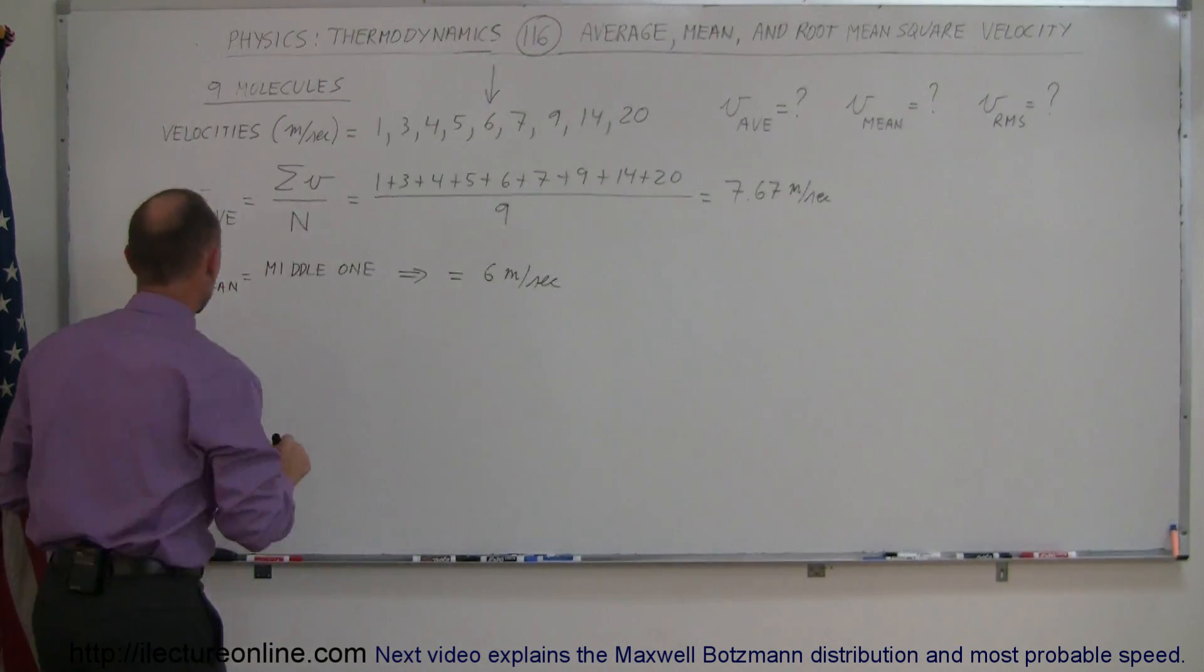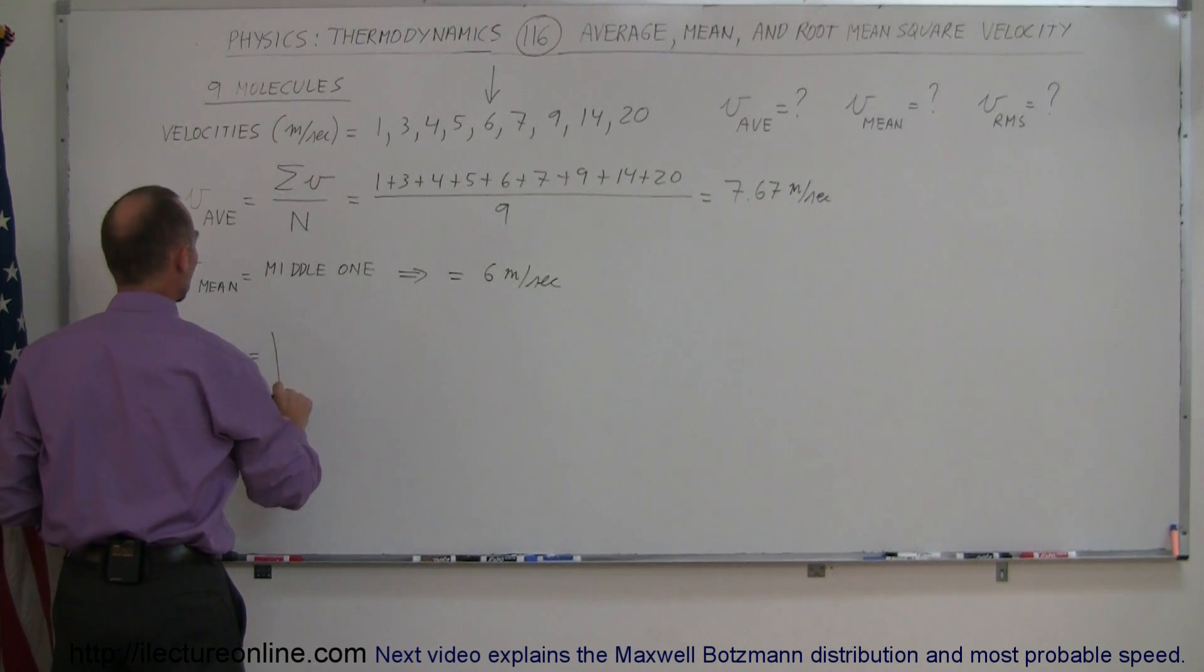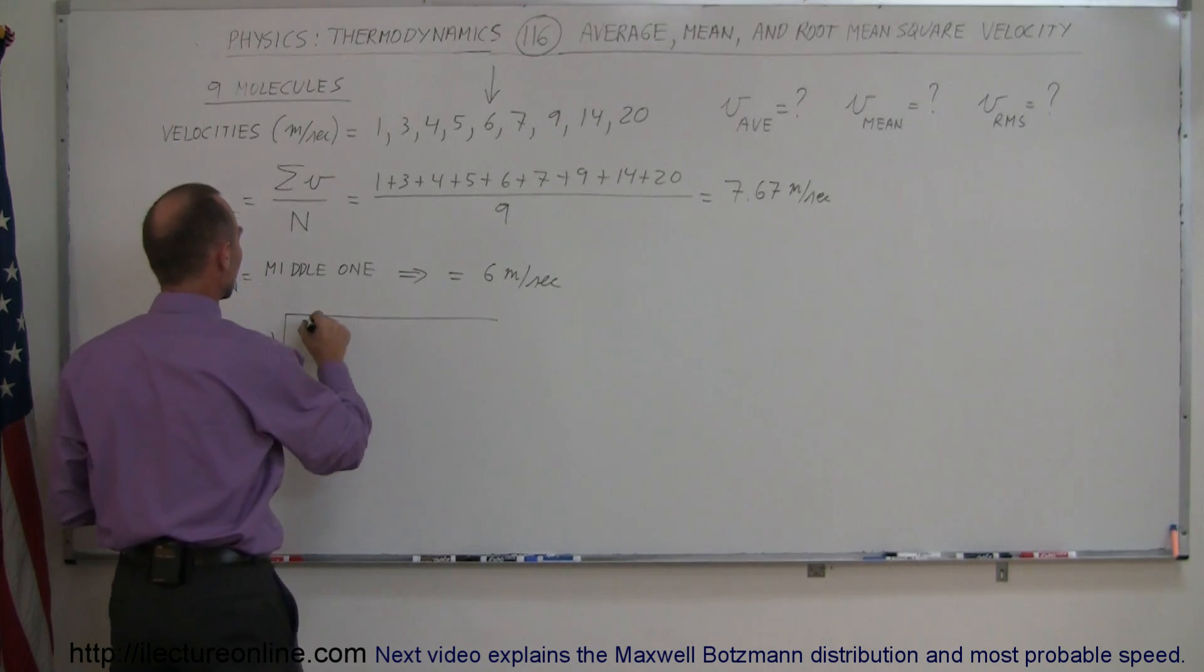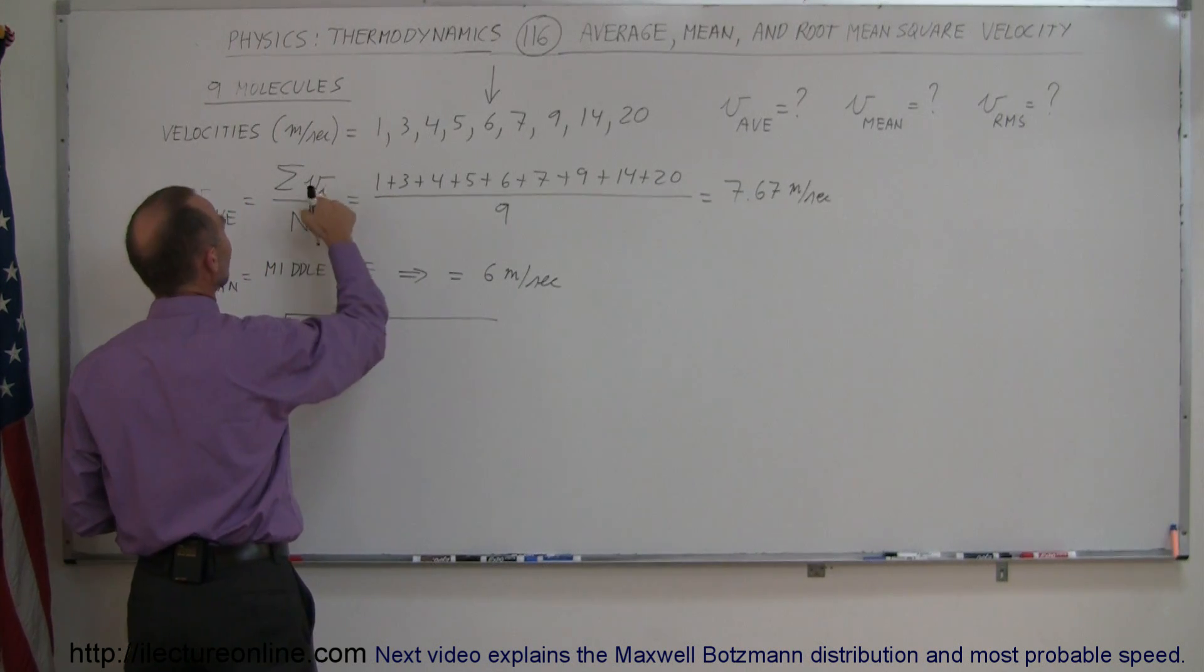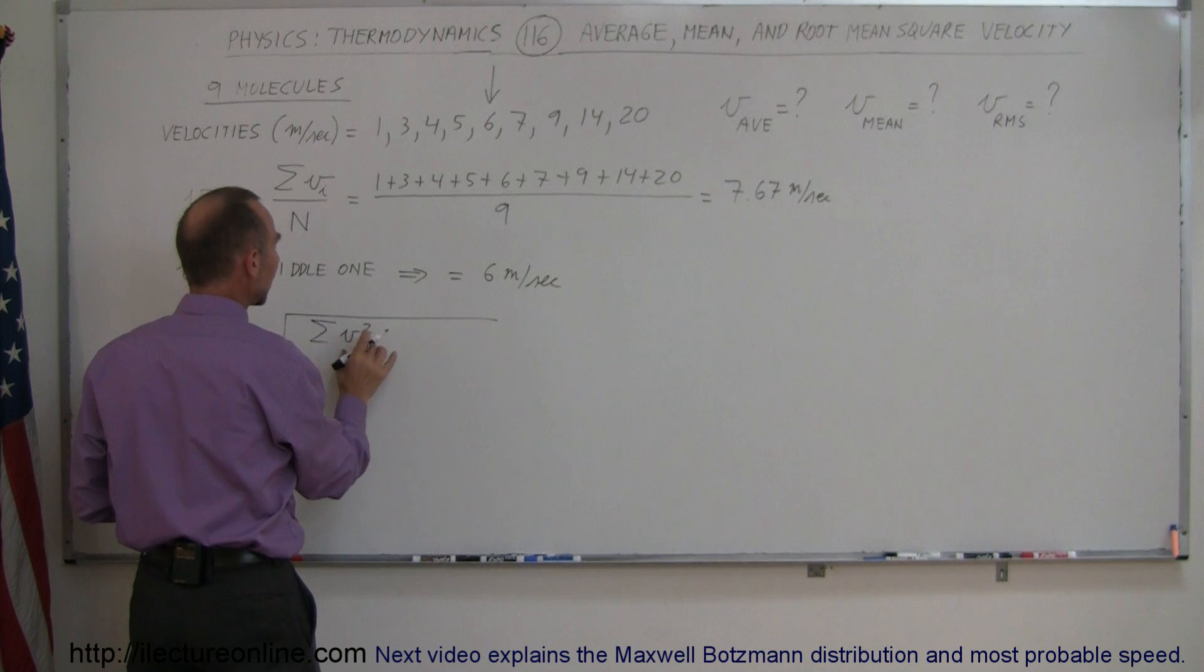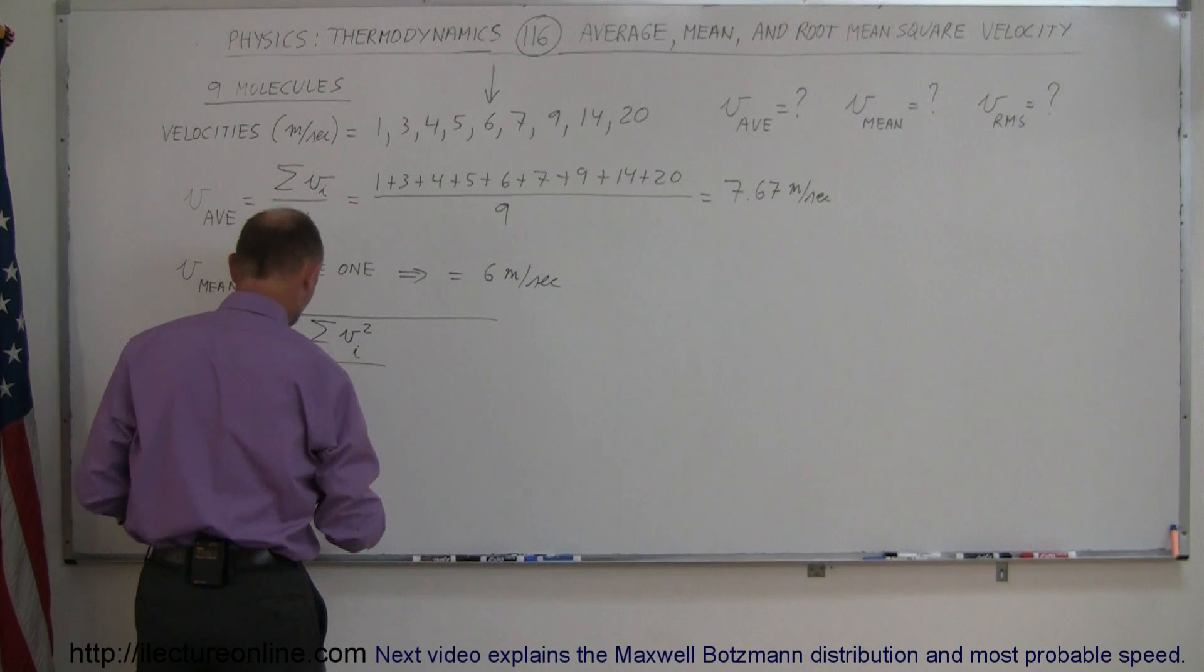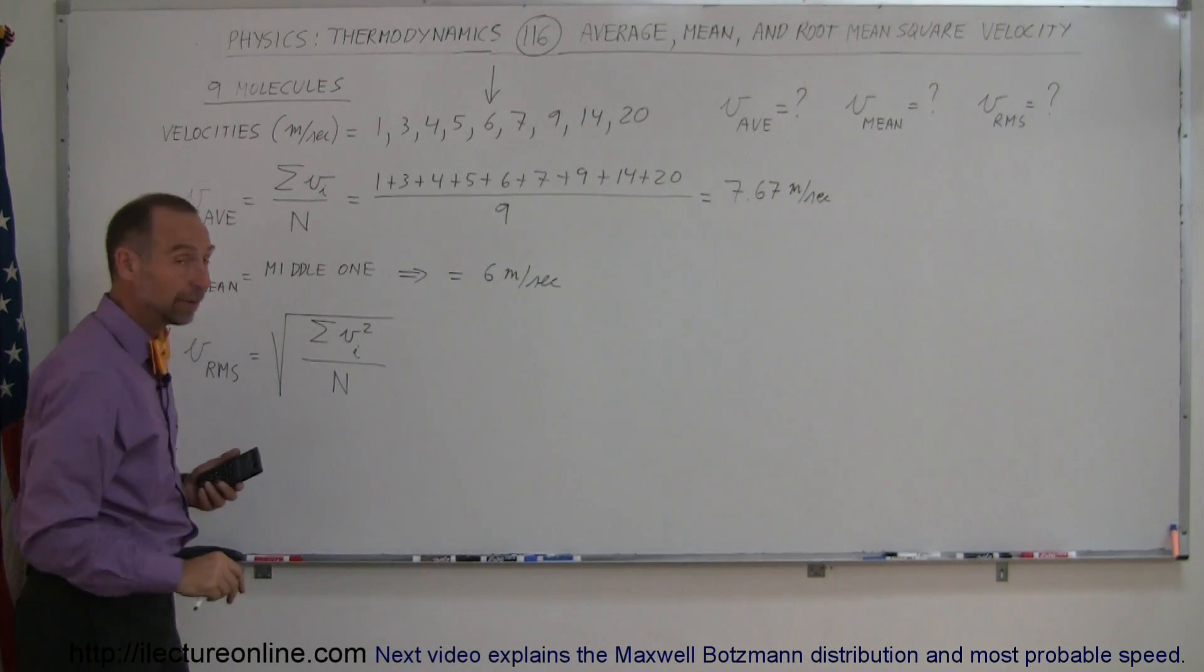Now the root mean square. V_RMS is equal to the square root of the sum of the squares of the velocities. So the sum of the individual velocities squared, so I'll write V sub i, and maybe I should have written V sub i there. That means the individual velocities divided by the total. Here I'm going to take the sum of the individual velocities squared, and then divide it by the total number, and then take the square root of that. Let's do that now.